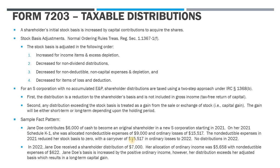Let's look at our fact pattern to see how this works from 2021 to 2022 and where everything is reported on Form 1040. In 2021, Jane contributed $6,000 of cash to become a shareholder in this S-corp. On her 2021 K-1, she had non-deductible expenses of $9,000 and ordinary losses of $15,517 — a lot of expenses and losses reducing her basis. The non-deductible expenses reduced her basis to zero. The capital contribution increases the basis, and after income increases, non-deductible items are applied first, then ordinary losses. There were no distributions in 2021, so her stock basis was reduced to zero and she'll have a carryover of $15,517.